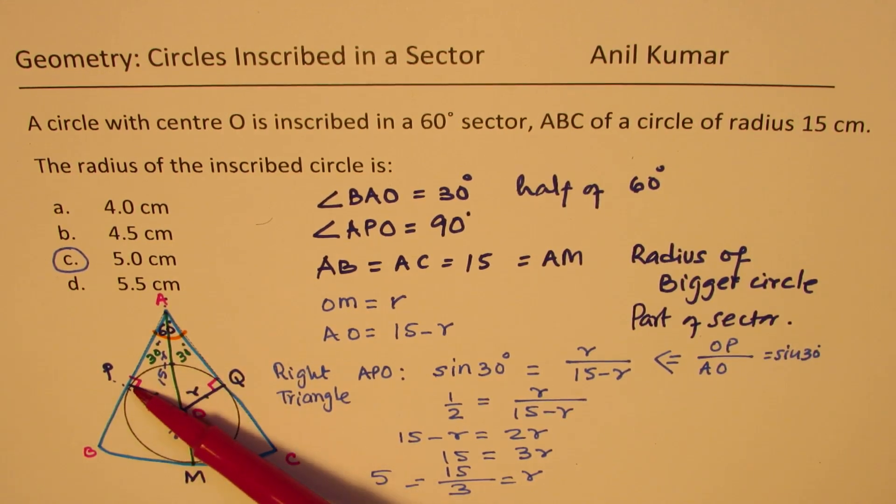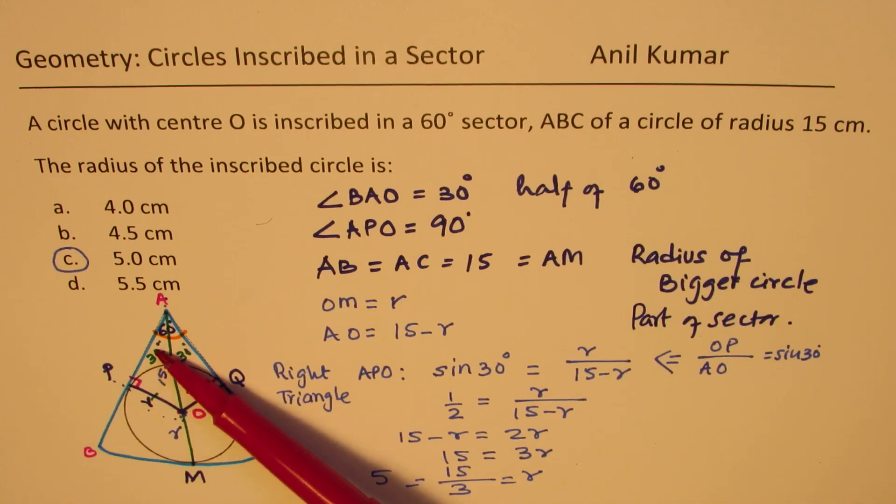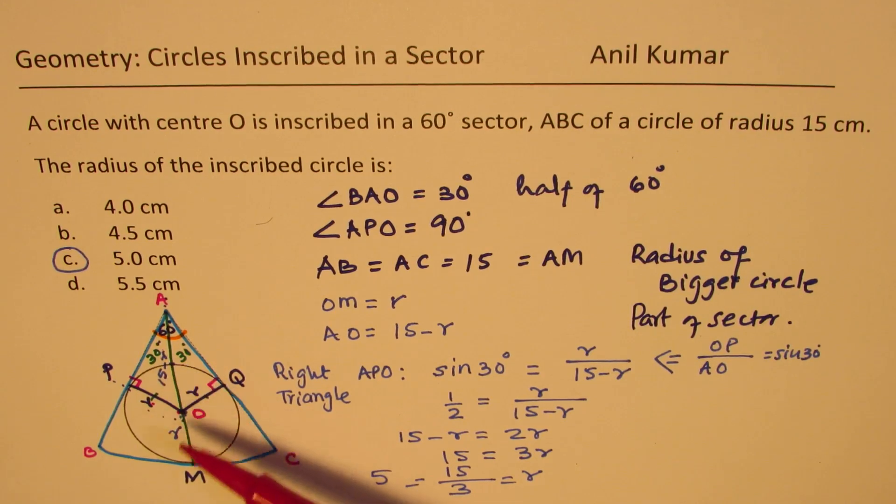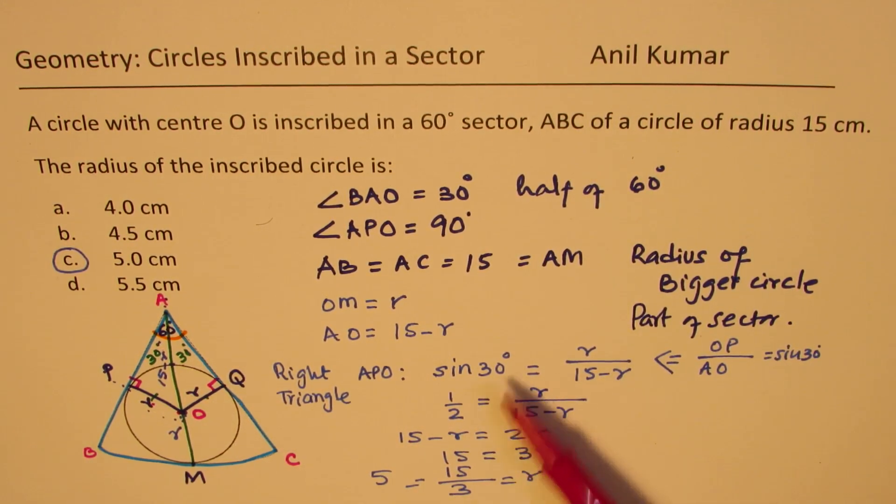OP is 90 degrees. So we have a right triangle there with 30 degrees opposite side R, hypotenuse 15 minus R. And solving for that equation, sine 30 equals to R over 15 minus R, we can find the value of R as 1 third of 15.